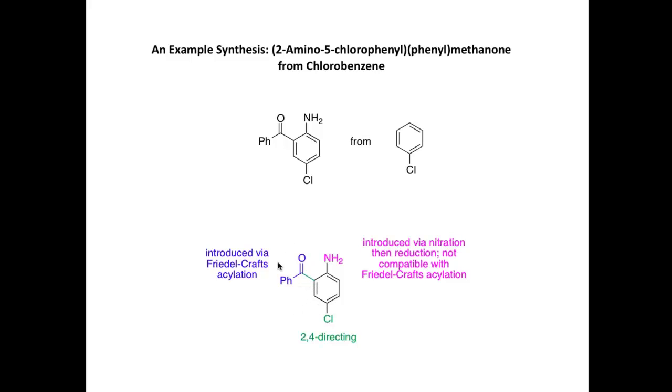This side chain, this ketone, can be introduced via a Friedel-Crafts acylation reaction. And finally, to introduce an NH2 group onto a benzene ring, we could use a nitration followed by a reduction sequence that we saw earlier on. But we need to be aware that an NH2 group on a benzene ring is not compatible with a Friedel-Crafts acylation reaction.